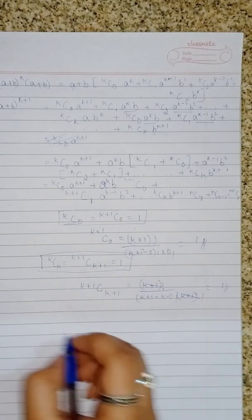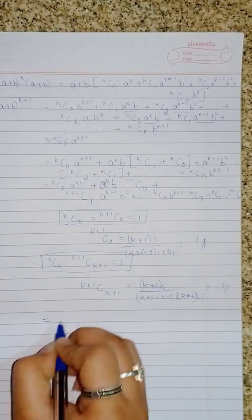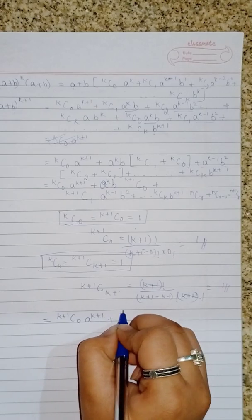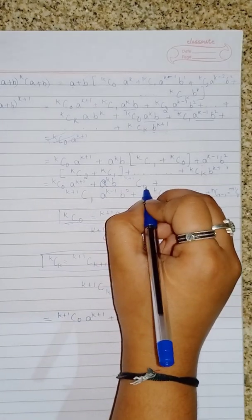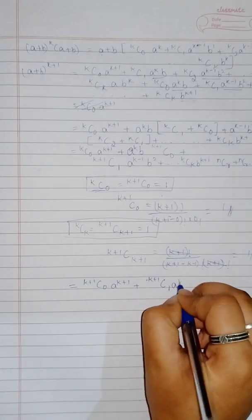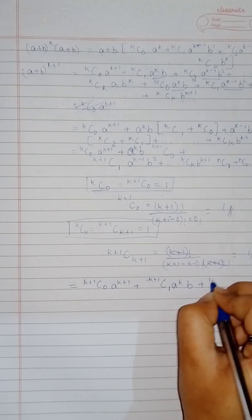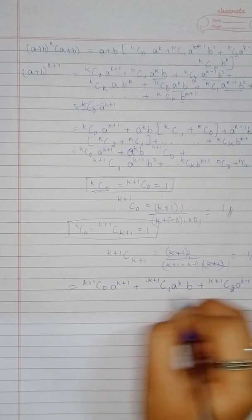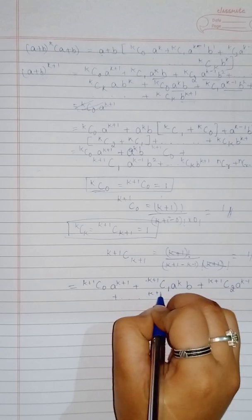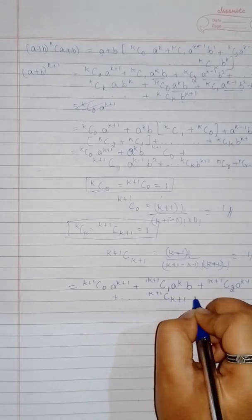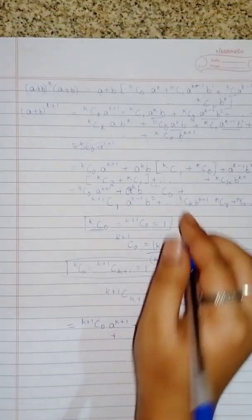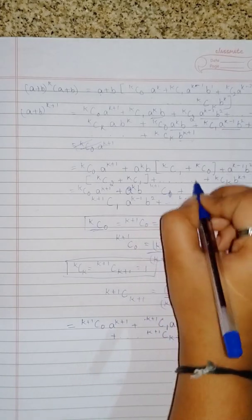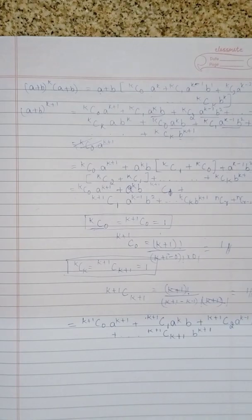After this step, you have to continue with: (k+1)C0·a^(k+1) + (k+1)C1·a^k·b + (k+1)C2·a^(k-1)·b^2 + ... + (k+1)C(k+1)·b^(k+1). Therefore (a + b)^(k+1) = (k+1)C0·a^(k+1) + (k+1)C1·a^k·b + (k+1)C2·a^(k-1)·b^2 + ... + (k+1)C(k+1)·b^(k+1). Therefore P(k+1) is true.